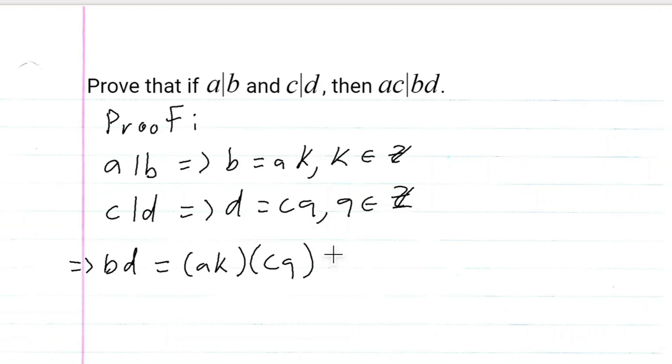And of course, using the associative property, we can say that this is the same thing as AC times KQ. So we have BD is equal to AC times KQ.